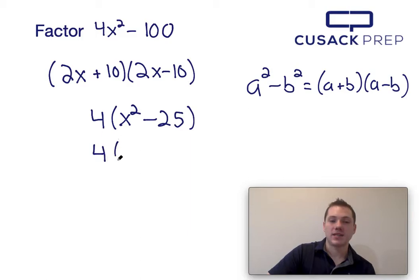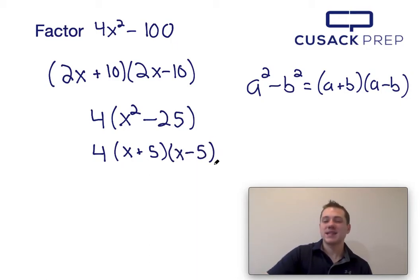Now x² - 25, well if I factor that via the difference of squares, that's going to be (x + 5)(x - 5). And that's the fully factored form.